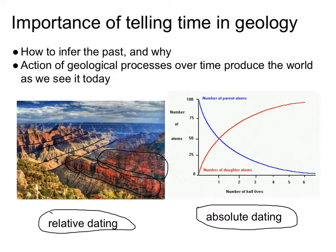The key feature for something that can provide an absolute date is that we need to be able to measure a certain amount of change, and that change must occur at a constant rate. Just like a clock's second hand sweeps at a constant rate — if we know anything that occurs at a constant rate and we can measure how much of it has happened, we can figure out how much time has elapsed.